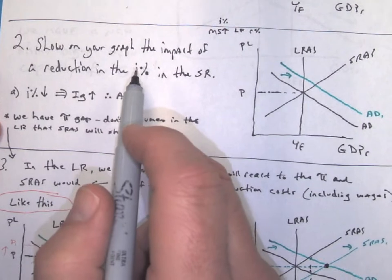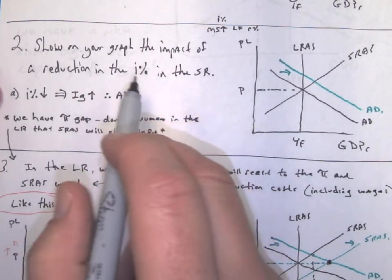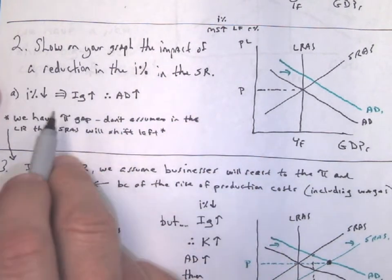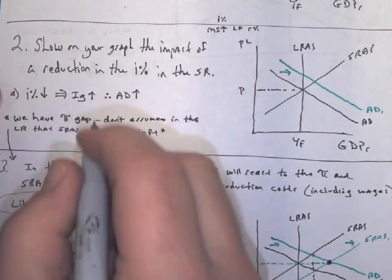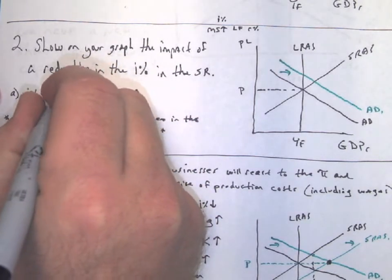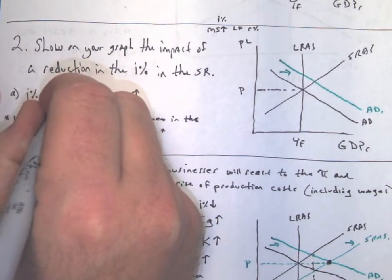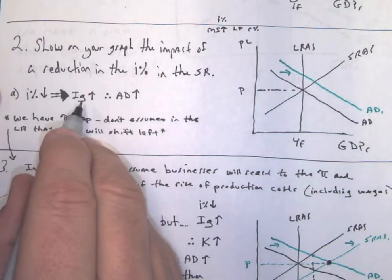And that's an expansionary policy. We want that to happen. We want to borrow money at low interest. And then when interest rates are low, that will lead to investment increasing.